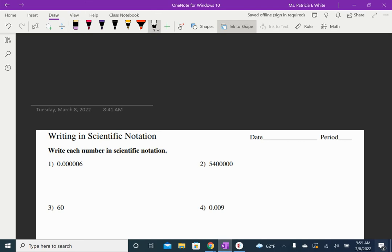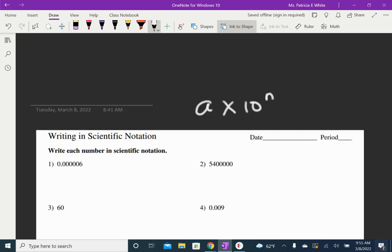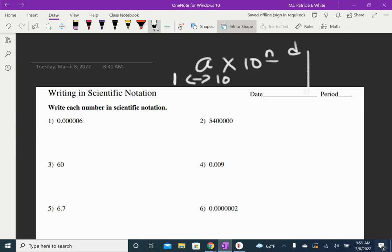So scientific notation, when we are writing in scientific notation, remember guys that it is A times 10 to the N, and that A has to be more than one but less than ten. And N is the number of times we move that decimal.